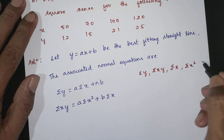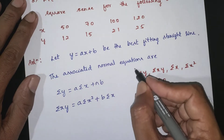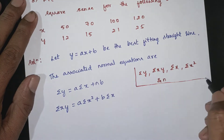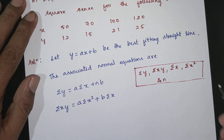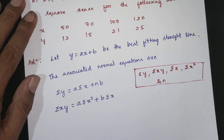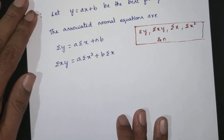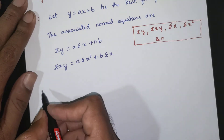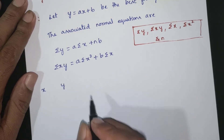This gives x squared and n. This data will be given. Given data: x and y.